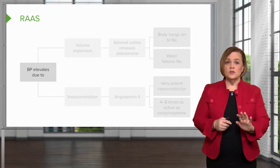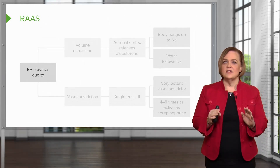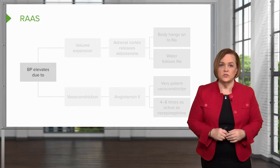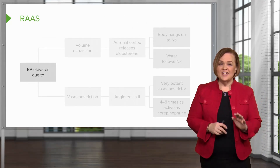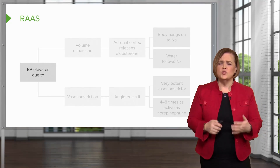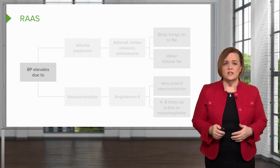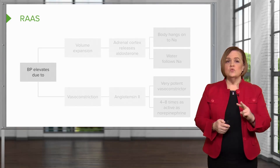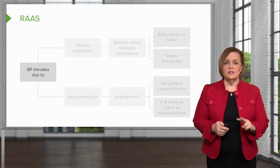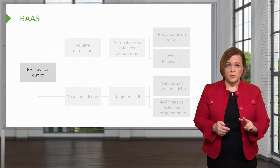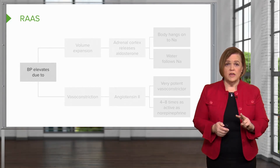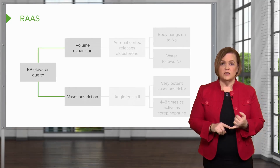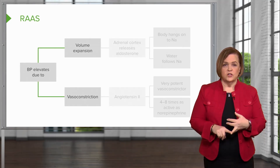We're going to keep going over this concept because this is the key to understanding multiple high blood pressure medications. Just understanding how the RAAS works will make it so much easier to understand these types of medications. So the two reasons your blood pressure elevates because of the end product of RAAS — angiotensin 2 — are volume expansion and vasoconstriction.